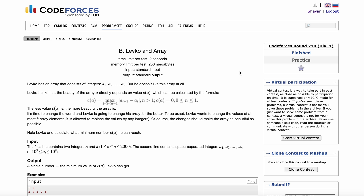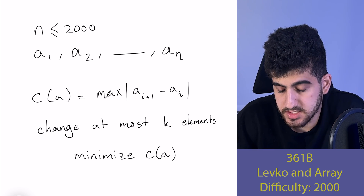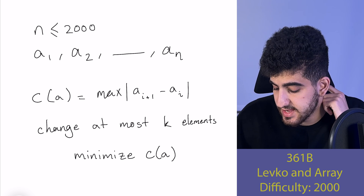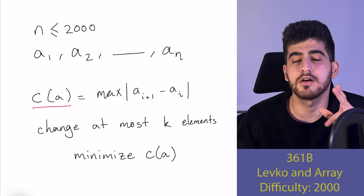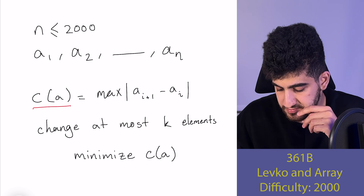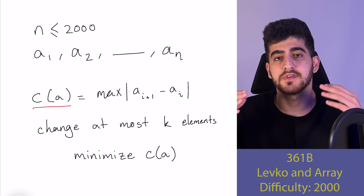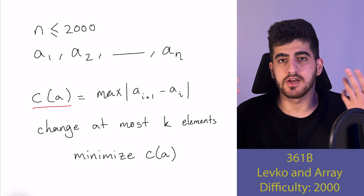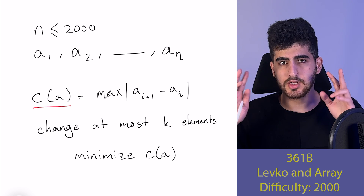Hey guys, this is Cheyenne and in this video we're gonna solve a 2000+ rated DP problem: 360B 'Left go and array'. This problem says that assume you have an array of size at most 2000, a1, a2, ..., an, and we define the beauty of an array C(a) as the maximum value of |a[i+1] - a[i]|. We want to change at most k elements of this array to minimize the value of C(a).